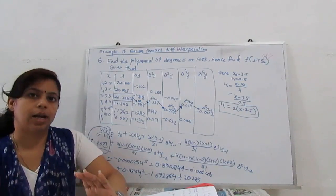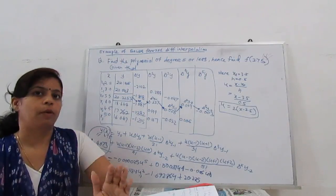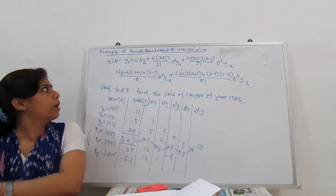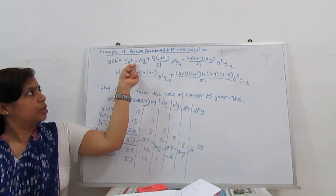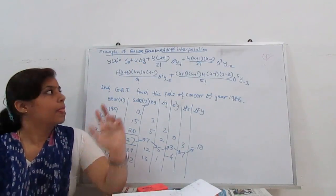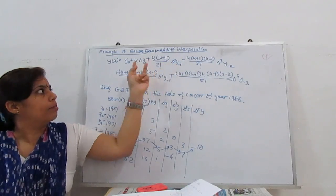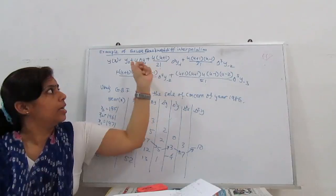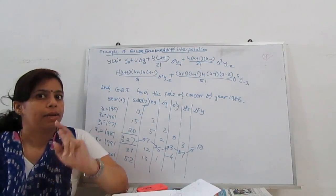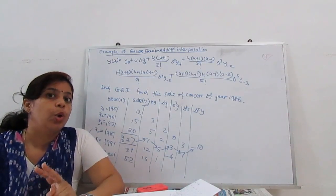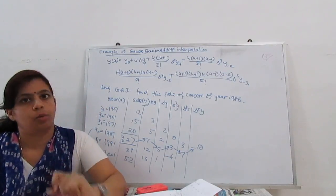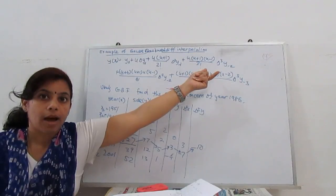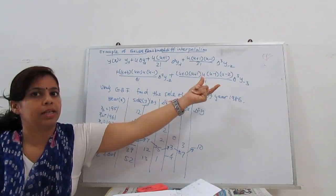Now we move on to the Gauss backward formula. The Gauss backward formula is: y(x) = y₀ + u·Δy₋₁ + u(u+1)/2! · Δ²y₋₁ + u(u+1)(u−1)/3! · Δ³y₋₂ + u(u+1)(u−1)(u+2)/4! · Δ⁴y₋₂ + u(u+1)(u−1)(u+2)(u−2)/5! · Δ⁵y₋₃, and so on. Note that y₀ appears only once at the start; then the subscripts follow Δy₋₁, Δ²y₋₁, Δ³y₋₂, Δ⁴y₋₂, Δ⁵y₋₃.